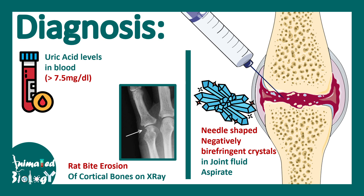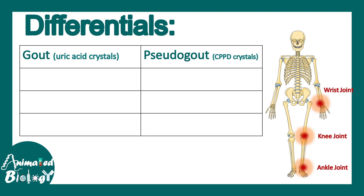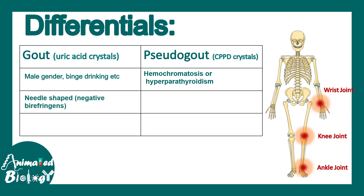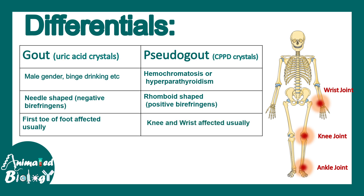A very similar condition is pseudo gout. Whereas gout occurs due to deposition of uric acid crystals, pseudo gout occurs due to deposition of CPPD crystals. Gout is more common in males and with binge drinking, while pseudo gout occurs in hyperparathyroidism and hemochromatosis. Gout crystals are needle-shaped and negatively birefringent, whereas CPPD crystals are rhomboid and positively birefringent. In gout, the first metatarsophalangeal joint is most commonly involved, while in pseudo gout, the knee and wrist are usually affected first.